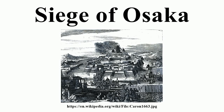The Siege of Osaka was a series of battles undertaken by the Tokugawa shogunate against the Toyotomi clan, ending in that clan's destruction. Divided into two stages and lasting from 1614 to 1615, the siege put an end to the last major armed opposition to the shogunate's establishment.